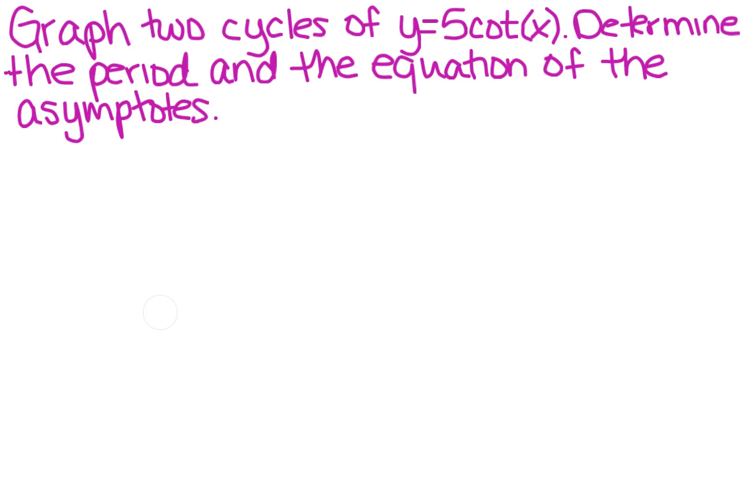So we want to graph two cycles of y equals 5 cotangent of x and determine the period and the equation of the asymptotes.